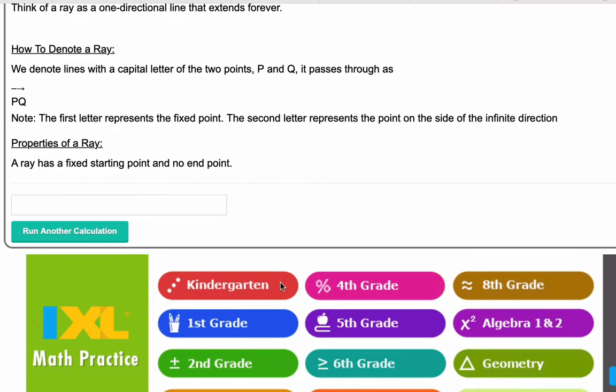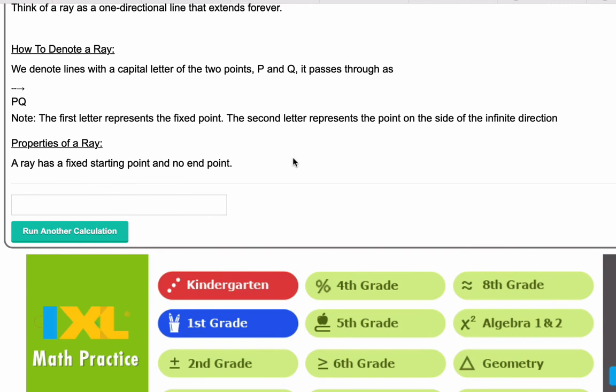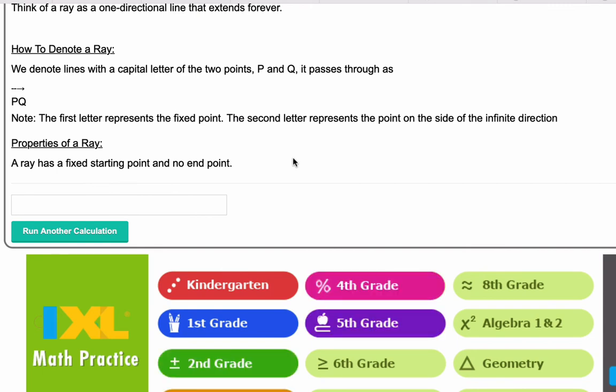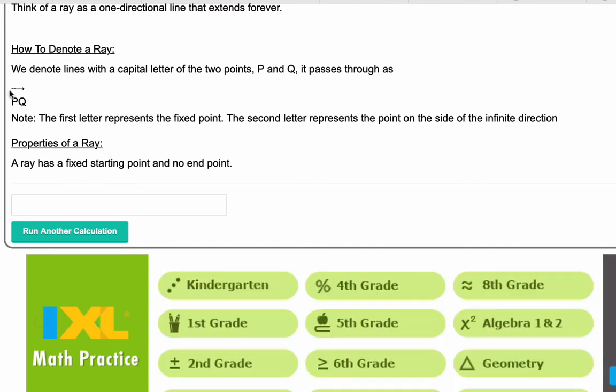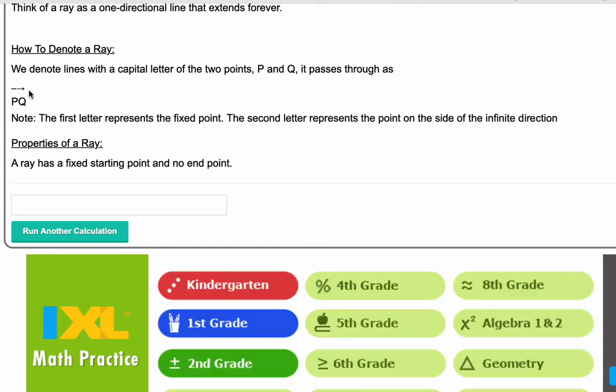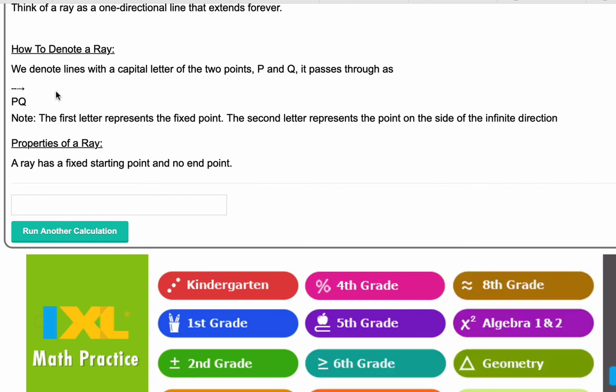So how do we denote or write a ray in geometry? Well, in the ray above with two points P, Q that the ray passes through, we write P, Q with a one directional line with an arrow above it. So that's how we denote a ray in geometry.